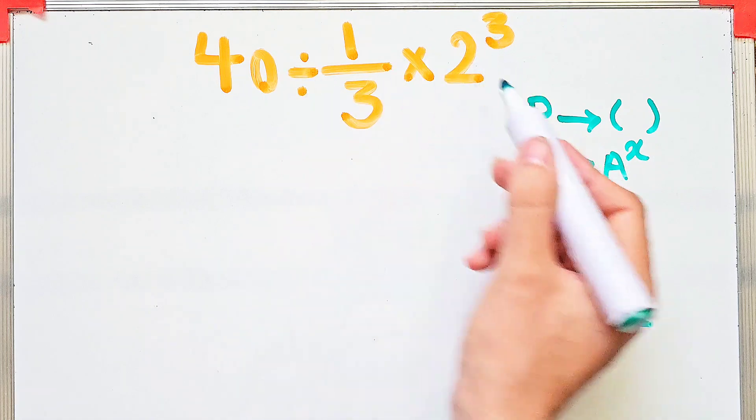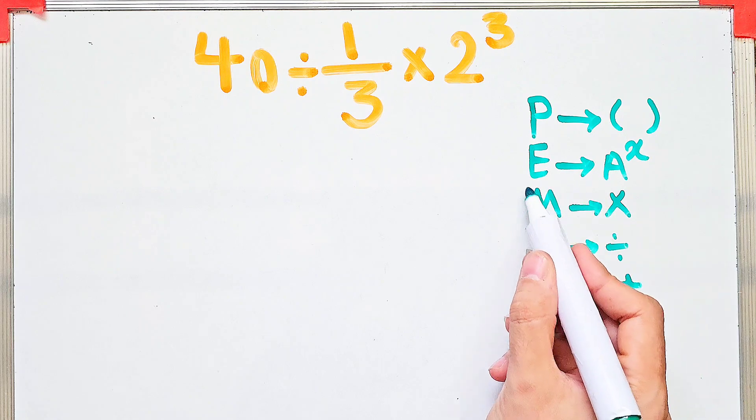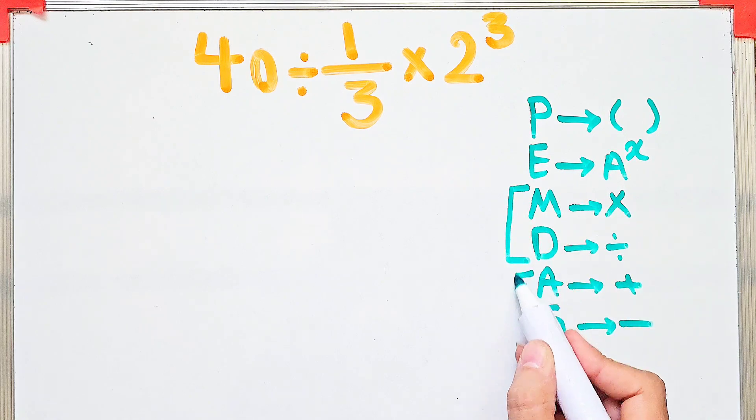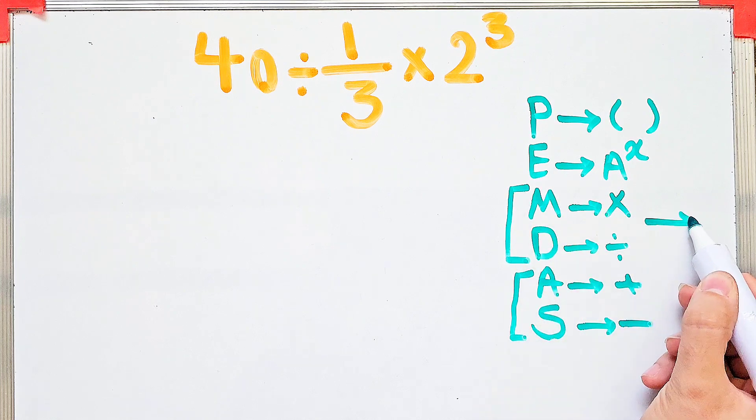According to the PEMDAS rule, first we simplify the exponent. Don't forget multiplication and division have the same level of priority. Also, addition and subtraction have the same priority. When we have both in an expression, we start from the left and simplify.